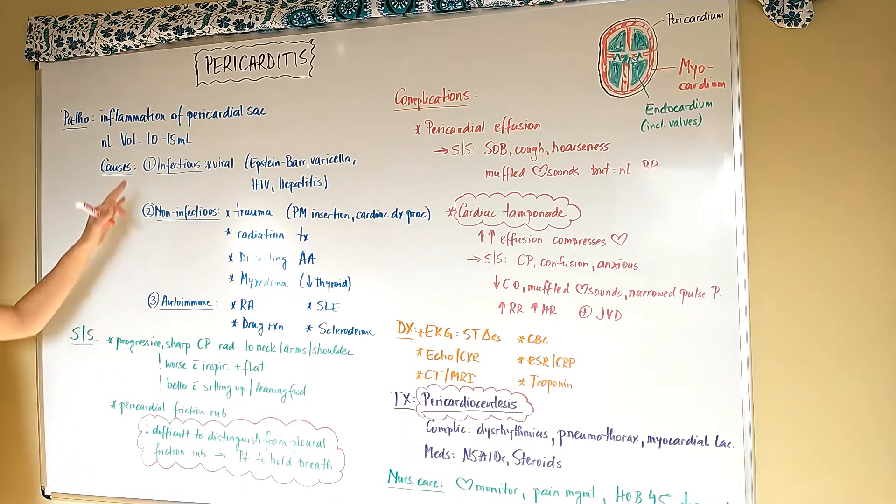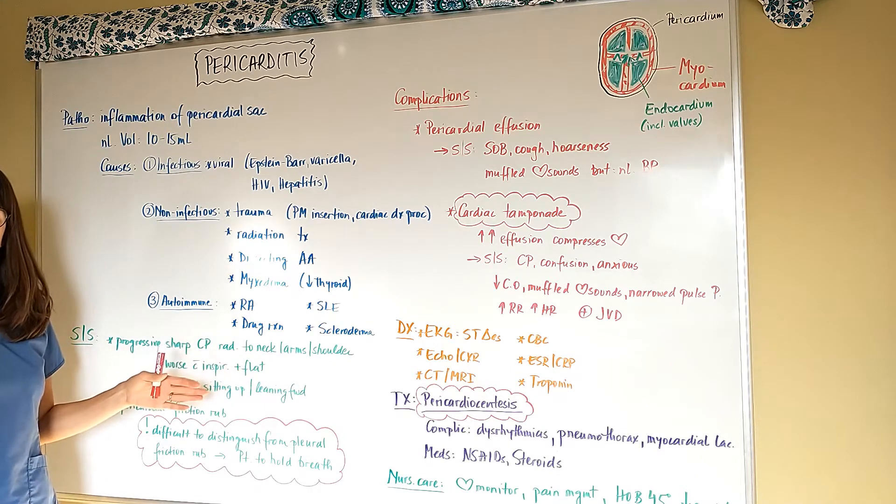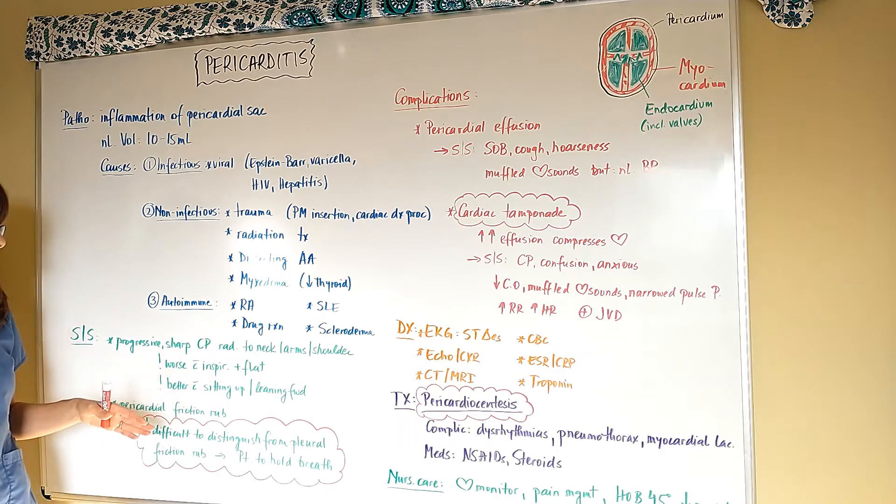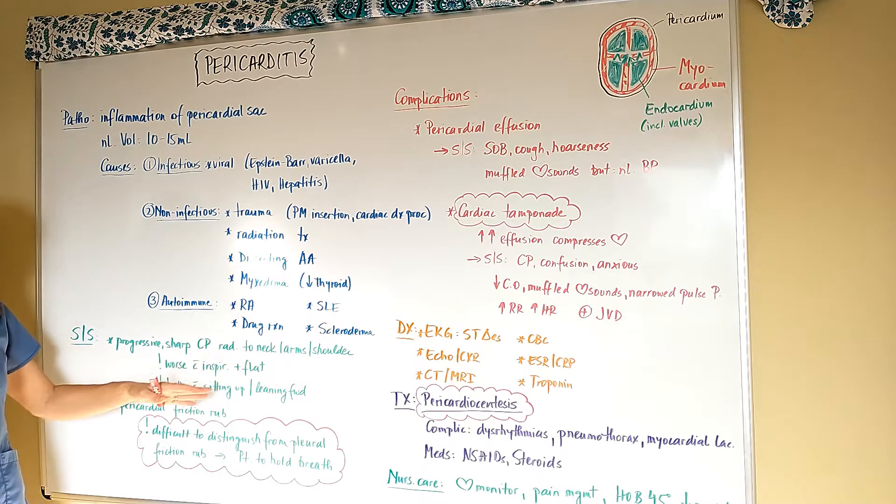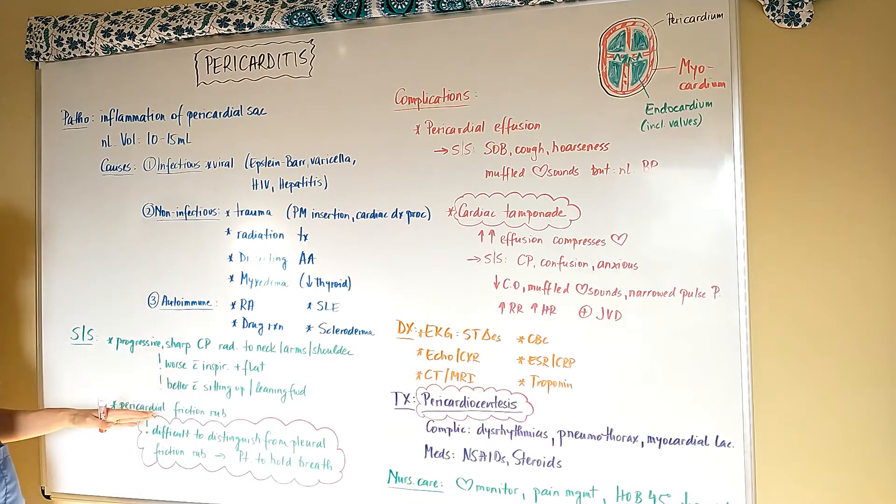Signs and symptoms of pericarditis are basically progressive sharp chest pain that radiates to the neck, arms, and shoulders. So it sounds pretty similar to angina or acute coronary syndrome, so sometimes it is very difficult to distinguish between the two, which is why the tests are often the same to rule out MI.